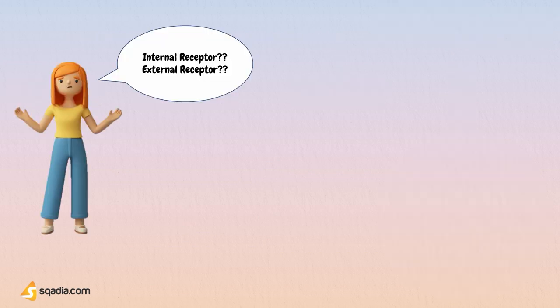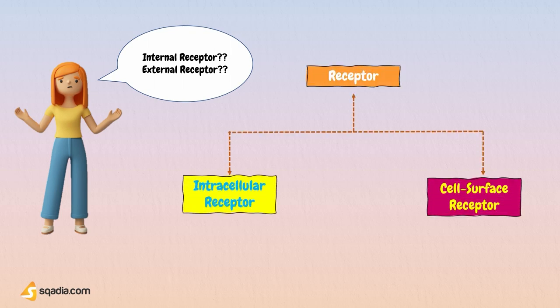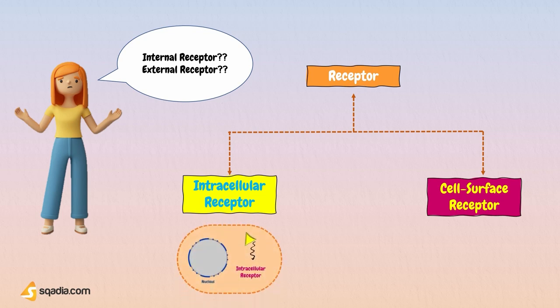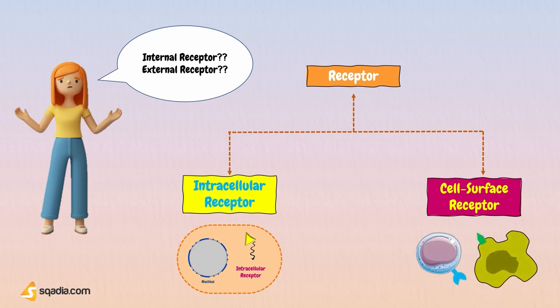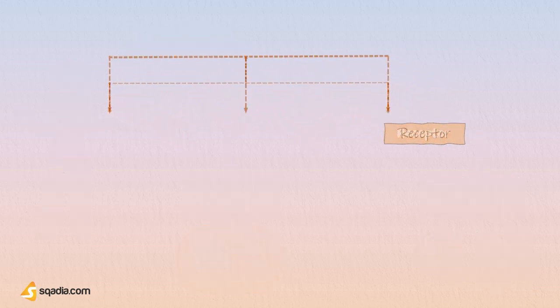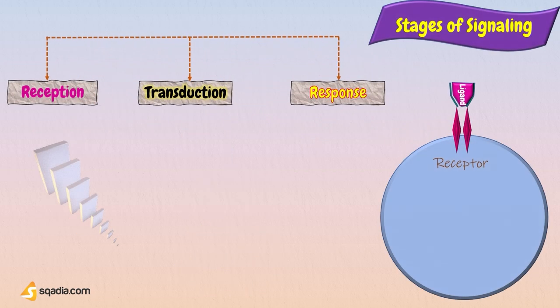But what is this about external and internal receptors? What is the difference between the two? Receptors can be divided into intracellular receptors and cell surface or extracellular receptors. Intracellular receptors are those that are inside the cell, in the cytoplasm, and cell surface receptors are found in the plasma membrane.